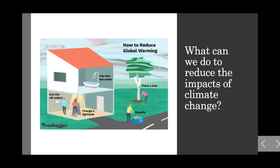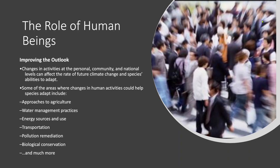What can we do to reduce the impacts of climate change? Plant a tree, recycle, use less hot water, change a light bulb and use the off switch. Humans are challenged to find a set of policies, practices and standards of behaviour that provide long-term economic opportunities and improve quality of life around the world while maintaining a sustainable climate and healthy ecosystems.